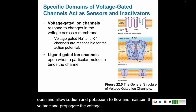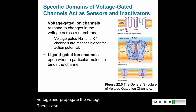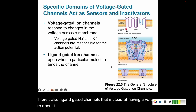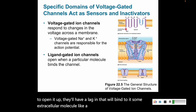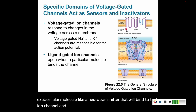There are also ligand-gated channels. Instead of a voltage opening them, a ligand will bind to them — some extracellular molecule like a neurotransmitter — that binds to the ion channel and causes it to open, allowing the flow of ions in response to that signal.